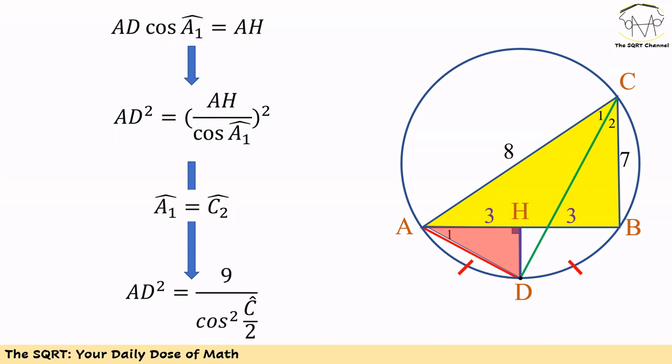We can write AH divided by cosine of C/2 squared. Since AH equals 3, we have AD squared equals 9 over cosine squared of C/2. The only missing value is cosine of C/2.